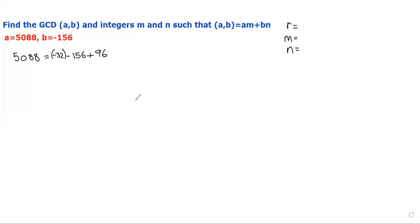The whole purpose of the Euclidean algorithm is that we repeat the division algorithm multiple times until we get a remainder of zero. So we take negative 156 and move it into the spot that 5088 was in. We take our remainder 96 and move it into the spot that negative 156 was in. Then we ask: how many times does 96 go into 156? Now here's a tricky point — we're dealing with a negative value on the side of the equal sign.